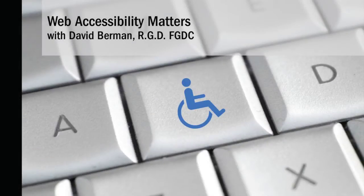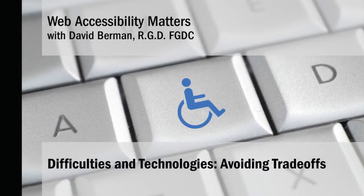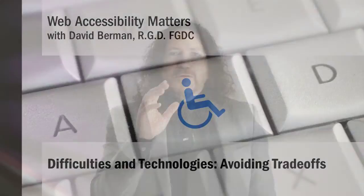Web Accessibility Matters with David Berman. An image of a computer keyboard with a wheelchair symbol on one of the keys. David Berman appears on screen and faces the camera for the duration of this video, wearing a dark grey suit with a black shirt and tie. The best way to get the best results from web accessibility is to understand the type of difficulties that people are grappling with and the kind of technologies we use to mitigate those challenges.